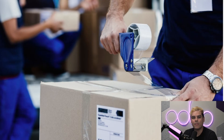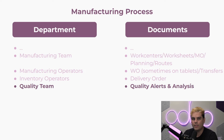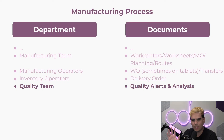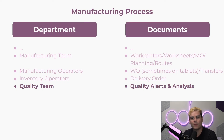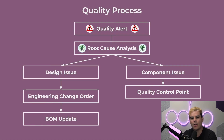Once the final product has been delivered, there's a chance the customer might report an issue with it — hopefully not, but it happens. This starts a new process involving the quality team. When a quality alert is triggered, such as a product return due to a faulty part, the logistics and inventory teams proceed to retrieve the faulty product for further inspection. Meanwhile, the engineers perform a root cause analysis, or RCA, to identify the cause of the problem.